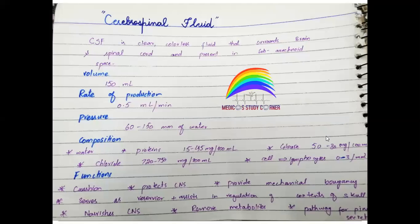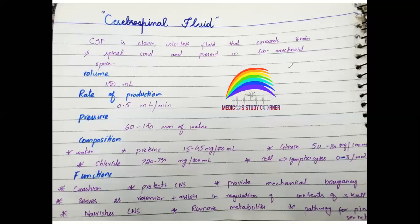What is CSF or Cerebrospinal Fluid? CSF is basically a clear, colorless fluid that surrounds the brain and spinal cord and is present in the subarachnoid space. First, I will explain a very simple structure. There are three layers of meninges that surround the brain and spinal cord: the dura mater, the arachnoid mater, and the pia mater.